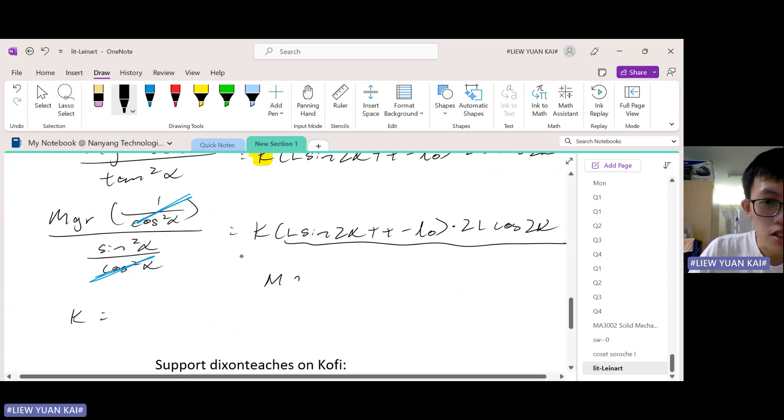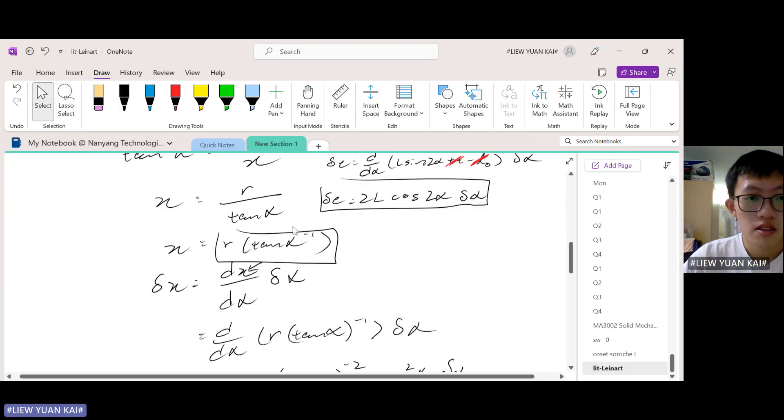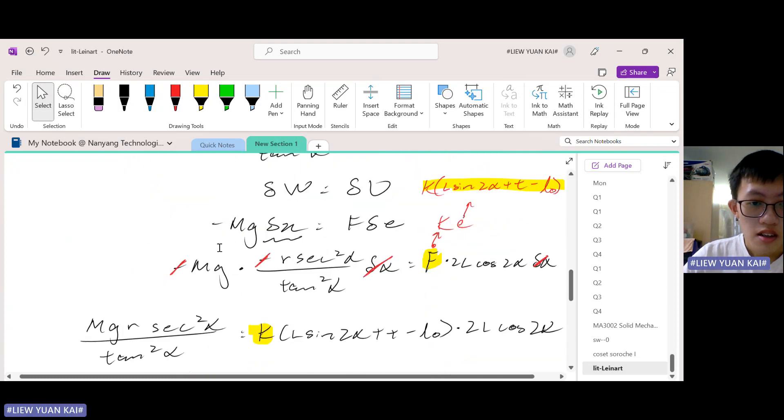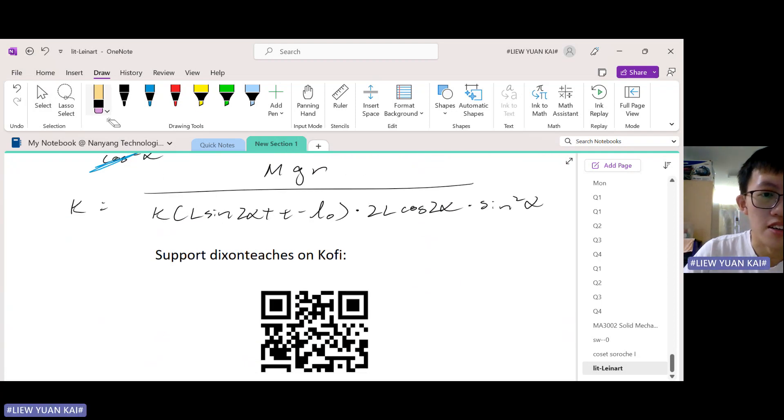So M, G, R over K times L sin 2α plus T minus L naught times 2L cos 2α times sine squared α. Let me check if this is correct. So we have M, G, R on the top divided by, oops, there's no more K here. Oops, my bad.